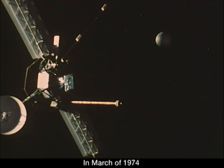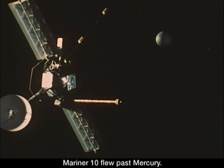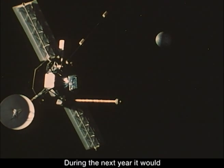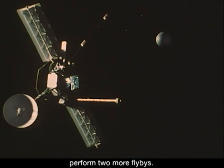In March of 1974, Mariner 10 flew past Mercury. During the next year, it would perform two more flybys.